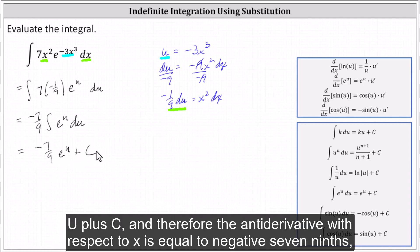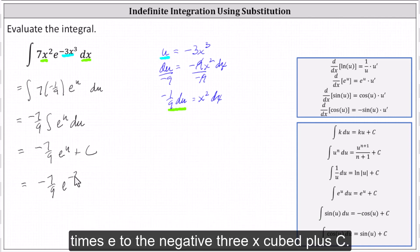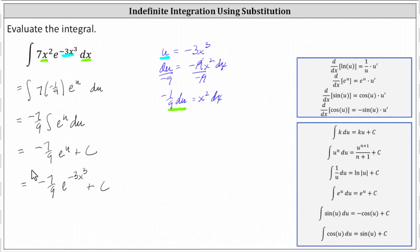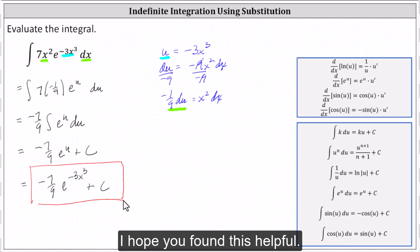And therefore the antiderivative with respect to x is equal to -7/9 times e to the -3x³ plus c. I hope you found this helpful.